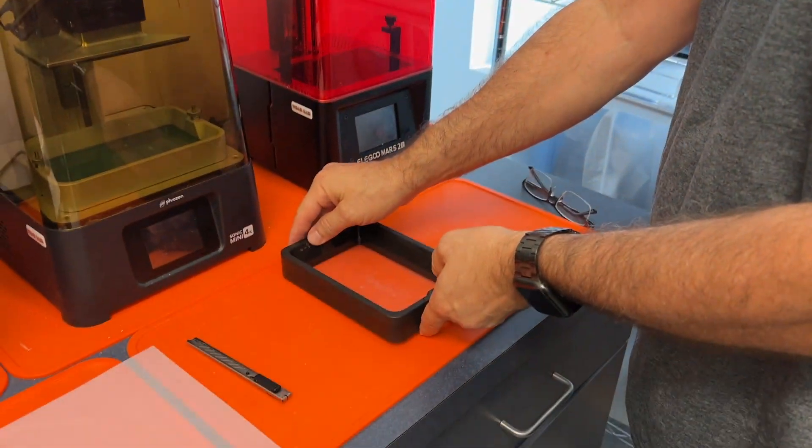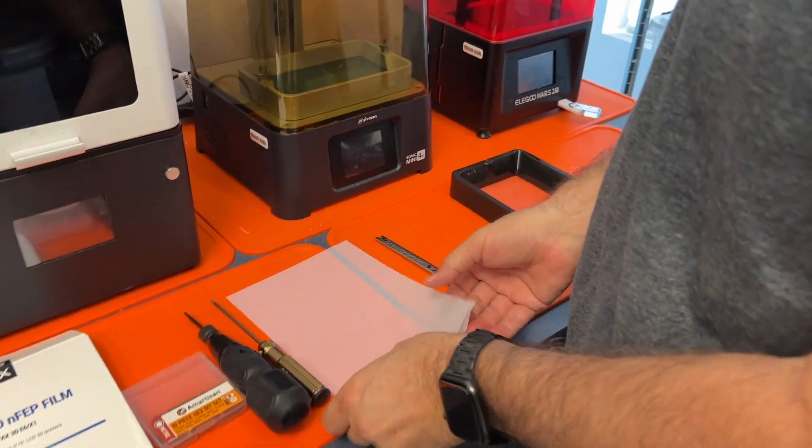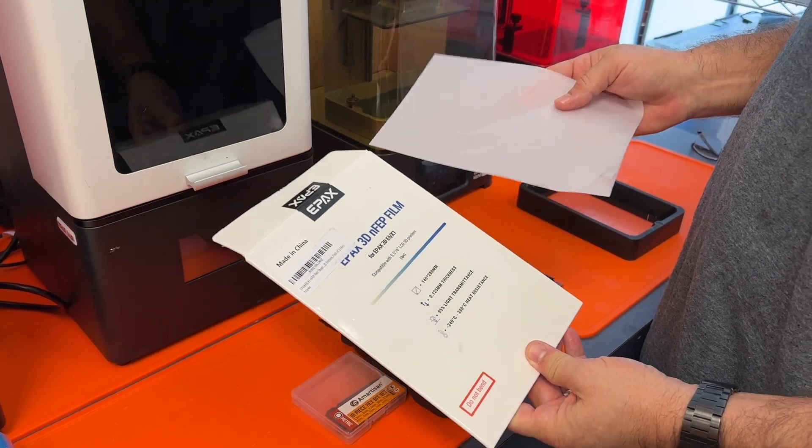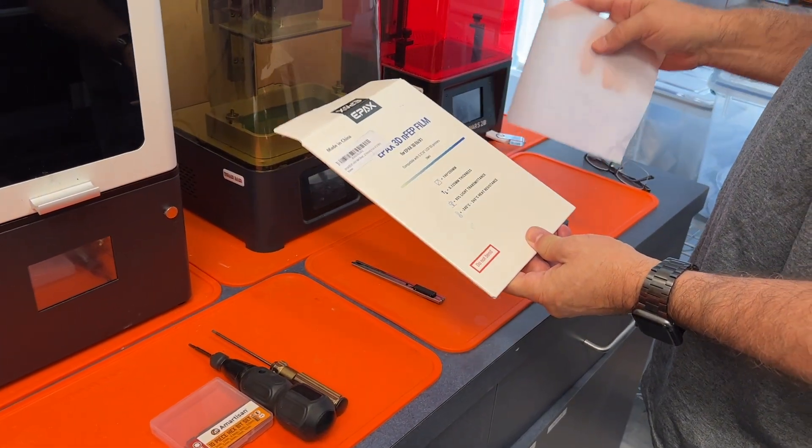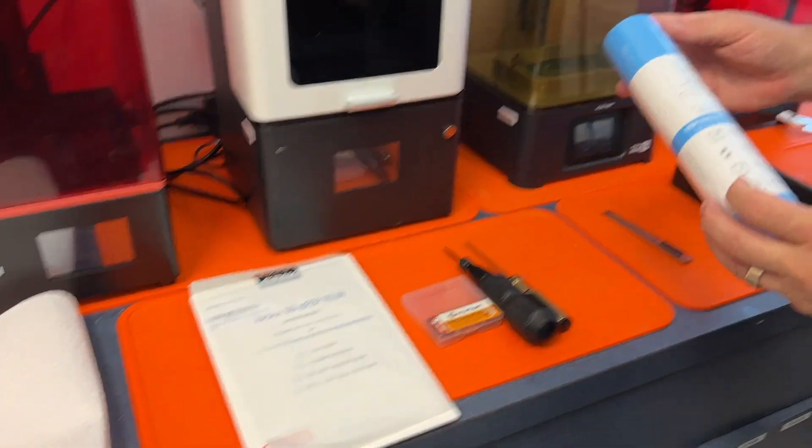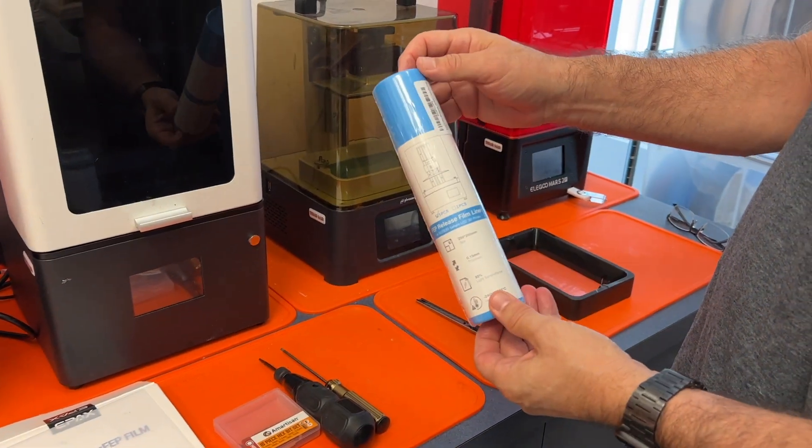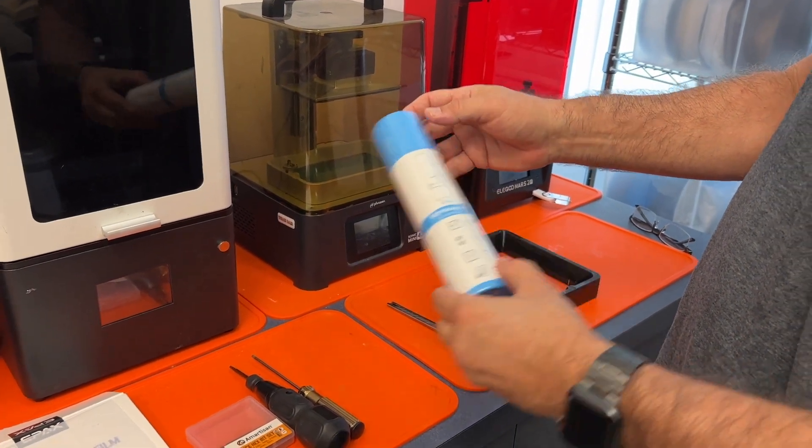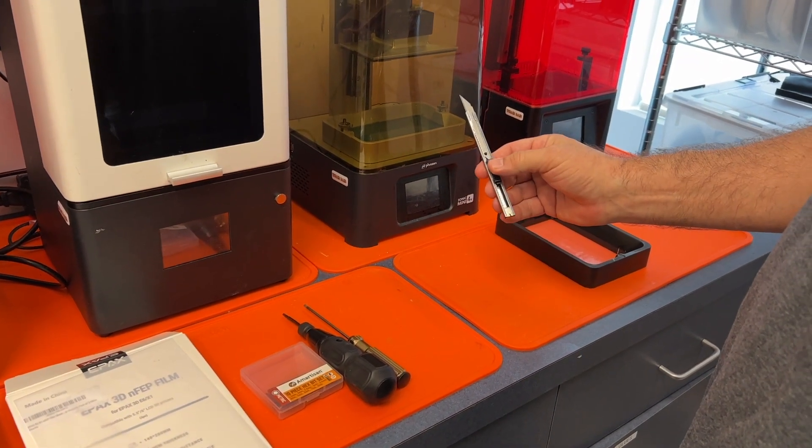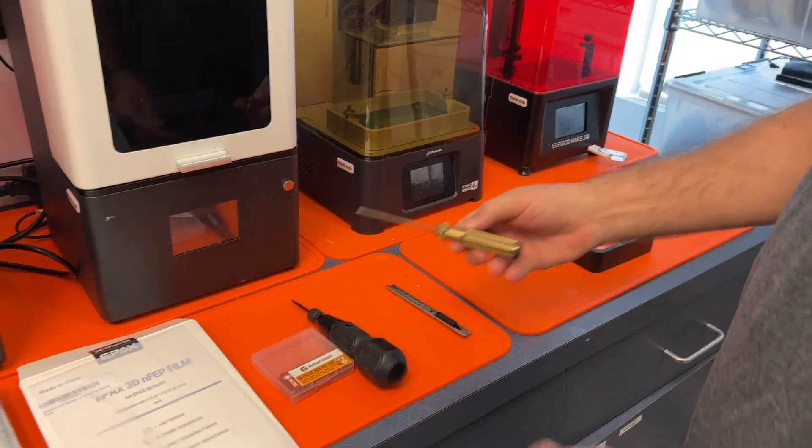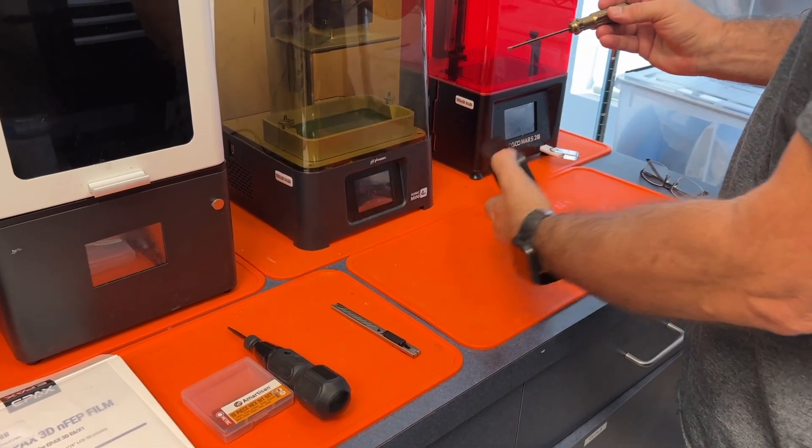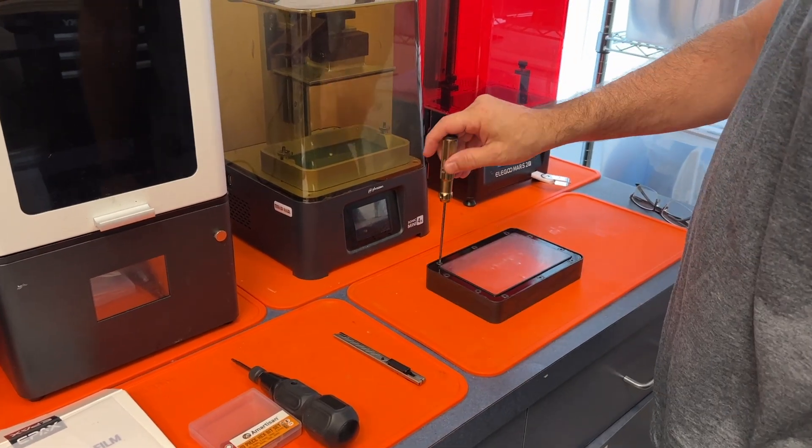Some things that you're going to need to do that is you're going to need some FEP. Epax and other brands make this NFEP which supposedly is a lot less sticky for the prints to stick to. It's a lot better. You could get a large roll of FEP as well and cut it down per use. You're going to need a sharp exacto blade. I like these little break off blades.